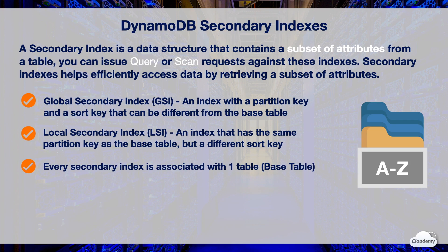Every secondary index is associated with exactly one table. When you create an index, you define an alternate key for the index, such as a partition key and a sort key. You also define the attributes that you want to project or copy from the base table into the index. DynamoDB copies these attributes into the index along with the primary key attributes from the base table. You can then query or scan the index as you would a table.